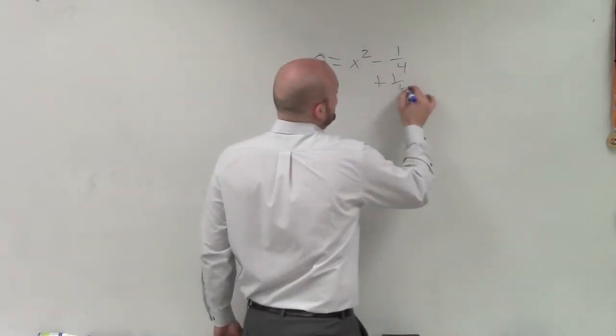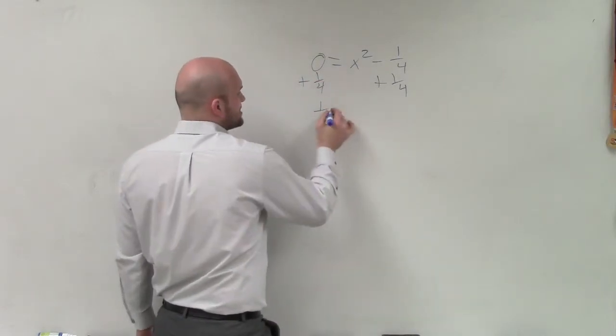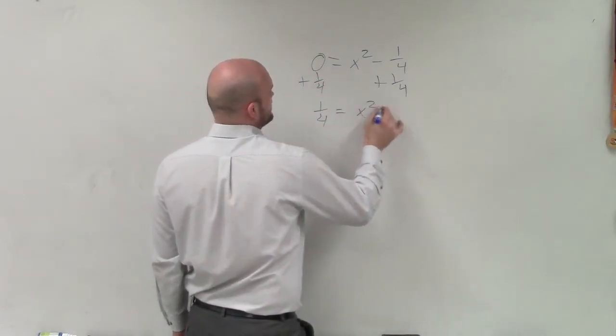So to isolate it, I can first use my addition property of equality by adding a 1 fourth to both sides. Therefore, I have 1 fourth equals x squared.